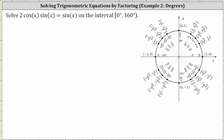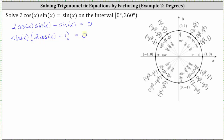So if we subtract sine x on both sides, we have the equation two cosine x sine x minus sine x equals zero. Now we will factor the left side by factoring out the greatest common factor of sine x. This gives us sine x times the quantity two cosine x minus one equals zero.